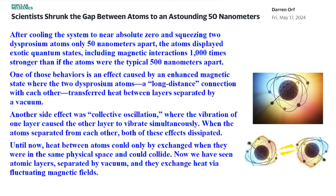Here's an article that came out this week: 'Scientists shrunk the gap between atoms to an astounding 50 nanometers.' After cooling the system to near absolute zero and squeezing two dysprosium atoms only 50 nanometers apart, the atoms displayed exotic quantum states — including magnetic interactions 1,000 times stronger than if the atoms were the typical 500 nanometers apart. One of these behaviors is caused by an enhanced magnetic state where the two dysprosium atoms have a long-distance connection with each other. Did I hear 'connection'? They're connected.